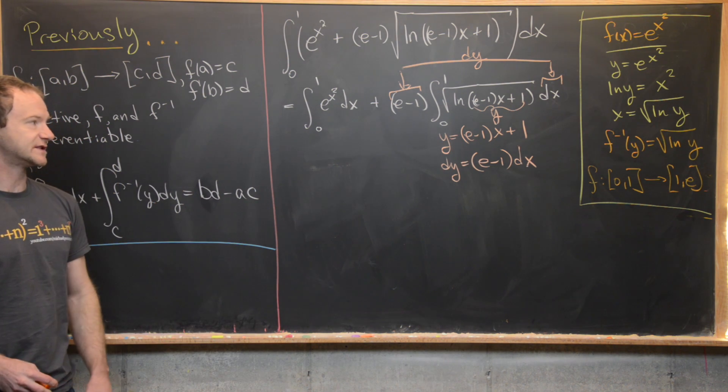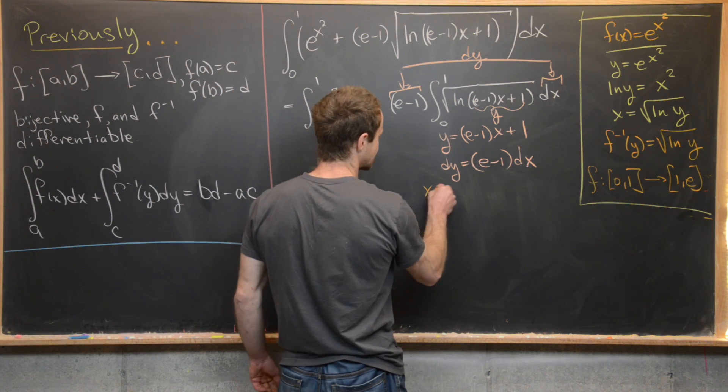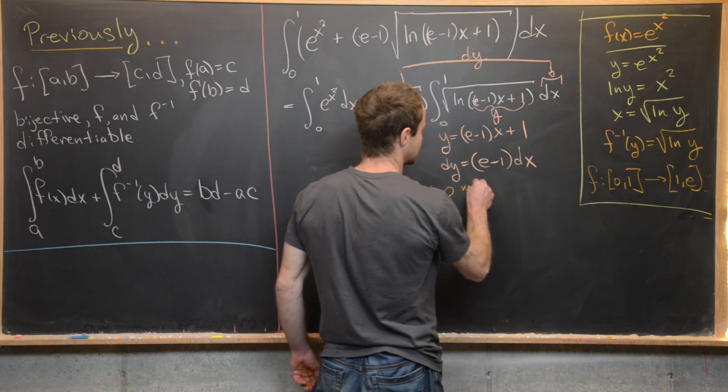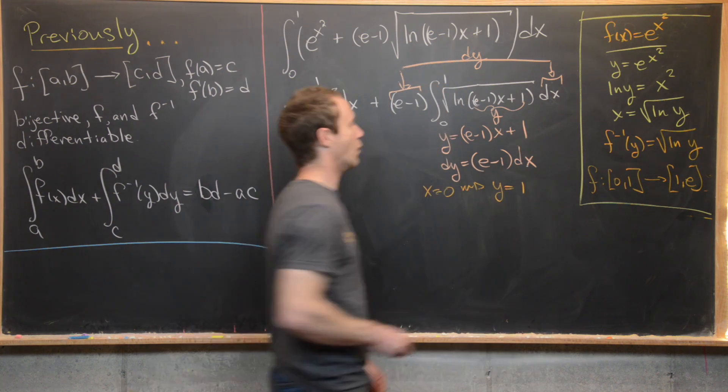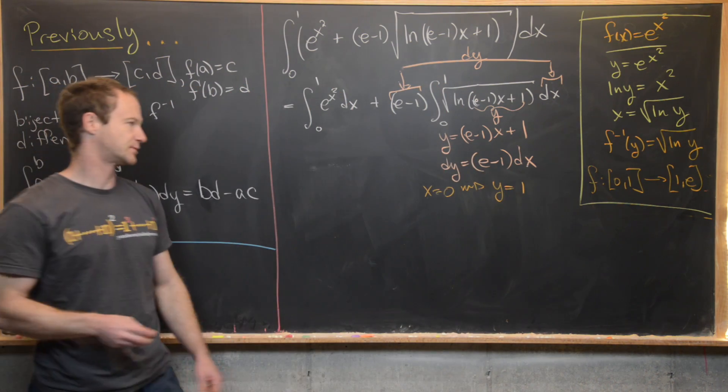Now, hopefully, the bounds of integration have changed appropriately. So notice if x is equal to 0, then that makes y equal to 1, because we've got (e minus 1) times 0 plus 1. That's pretty clear.